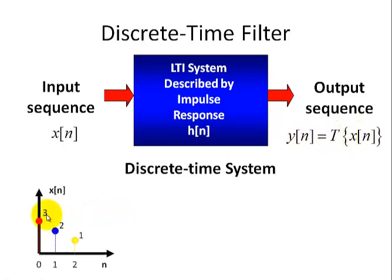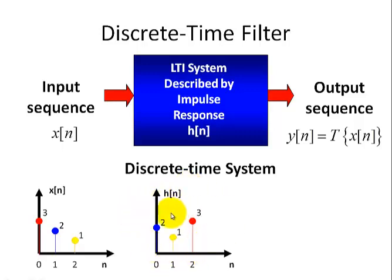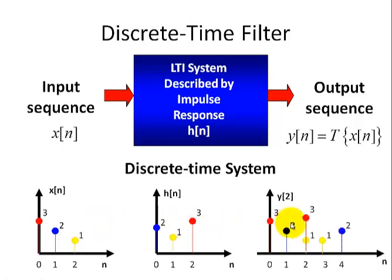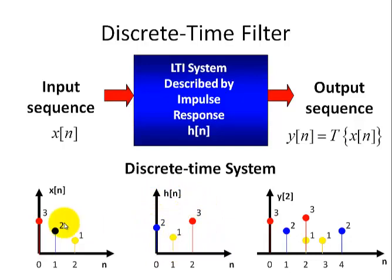Here we have our input sequence and a filter response to a particular input — specifically the impulse — and then we have an output. The output is based on how we treat the input sequence and how we use these values to generate our output, along with h(n) which describes how we're going to manipulate our input.